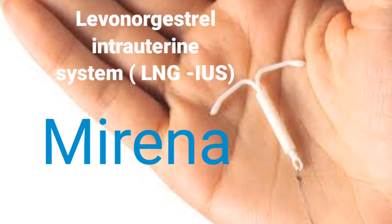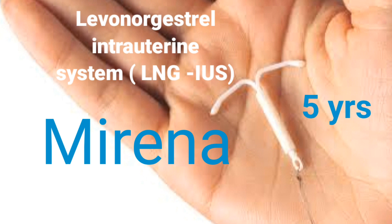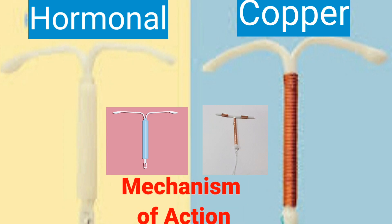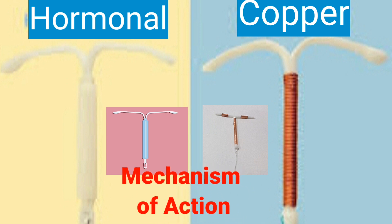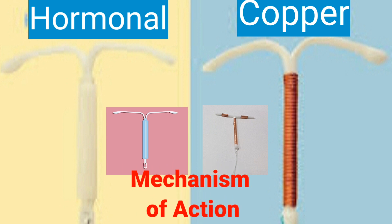For the hormonal type, commonly available in the United States is the Skyla, and now also available in the Philippines is the Mirena. The levonorgestrel intrauterine system is a small contraceptive device consisting of a polyethylene T-shaped frame with a steroid reservoir around a 32-millimeter long vertical stem. It contains 52 milligrams of levonorgestrel and releases approximately 20 micrograms per day, reducing to approximately 10 micrograms per day after five years.